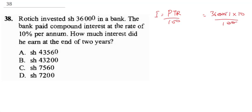Canceling the zeros, we have the interest as 3,600. Now do the principal 36,000 plus 3,600, which gives a total of 39,600. This will now be our new principal.